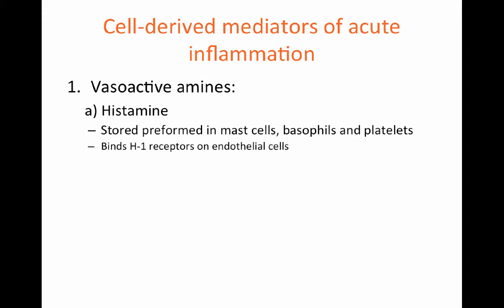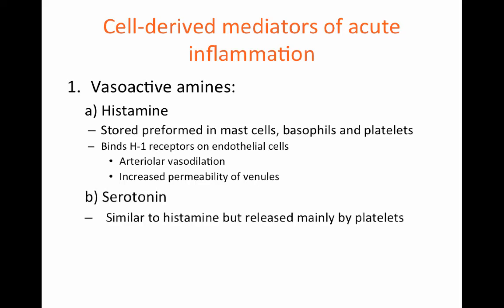Histamine binds to H1 receptors on endothelial cells and causes vasodilation of arterioles and increased permeability of venules. Another vasoactive amine is serotonin, which is similar to histamine but released mainly by platelets. Serotonin is released by platelets when they bind to a clot and functions as a vasoconstrictor to help regulate hemostasis and block clotting.